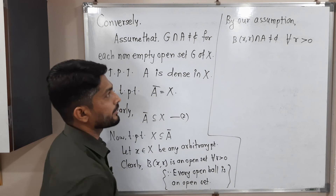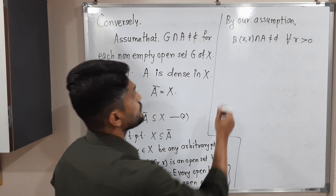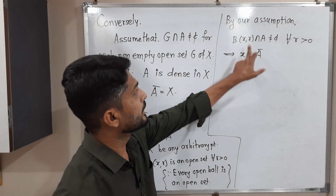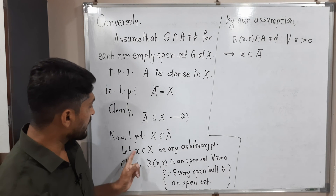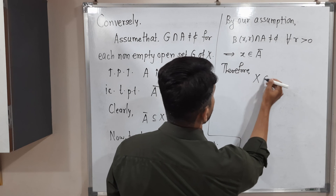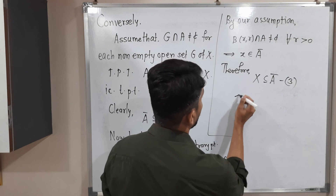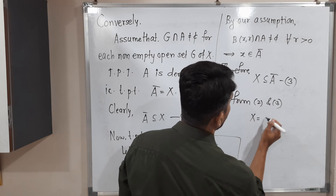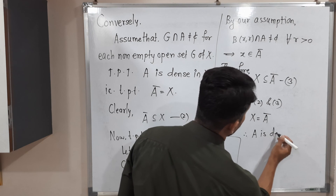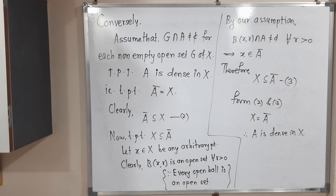This is true for each non-empty open set, and since this holds for all r greater than zero, this is exactly the definition of a closure point. Therefore x belongs to Ā. We started with x belonging to capital X and proved it is in Ā. So X is a subset of Ā. Combining Ā subset of X and X subset of Ā, we get X equals Ā. This is the definition of density, therefore A is dense in X. We have proved both directions. Thank you, see you in the next video.